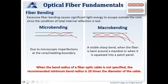When the bend radius of a fiber optic cable is not specified, the recommended minimum bend radius is 20 times the diameter of the cable. So a 1-inch diameter cable has a minimum bend radius of 20 inches — meaning you need 20 inches to go around a corner. This is the dynamic bend radius for when you're pulling the fiber. For a static bend radius, if not otherwise specified, it is 10 times the diameter of the fiber.